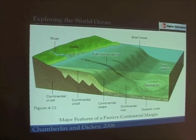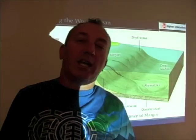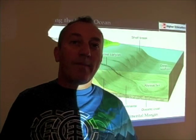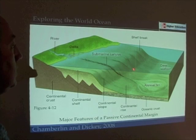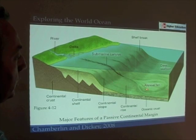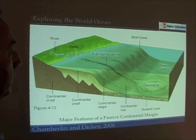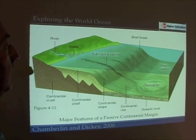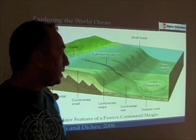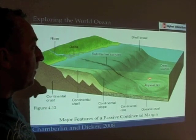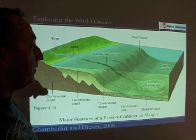The continental slope is really where you find the transition between continental crust and oceanic crust. If you think of the continents as being like ice cubes, the continental slope is the side of the ice cube. The very gently sloping region just off of the continental slope is the continental rise, where we see large accumulations of sediments.